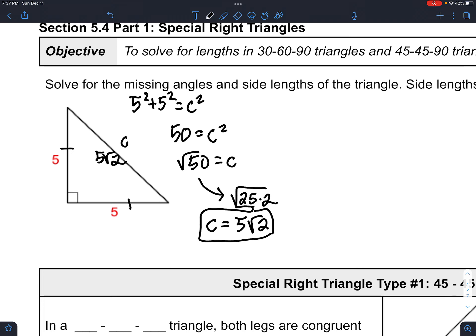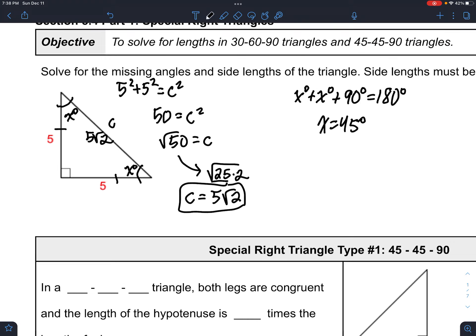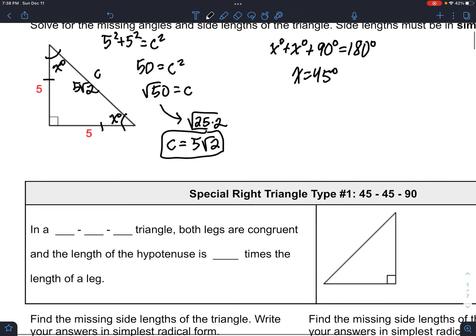And because this is an isosceles triangle, we know that the base angles are equal, let's say this is like x. Well, a triangle has 180 degrees, so we could set up an equation, something like this, which means that x is 45 degrees. So this is actually our 45, 45, 90.